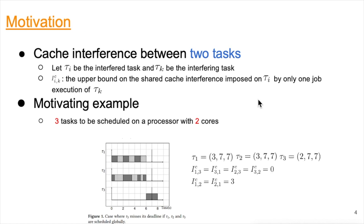Let's explain the cache interference between only two tasks. Let tau_i be the interfered task and tau_k be the interfering task. We use the symbol R_ik to denote the upper bound of the shared cache interference imposed on tau_i by only one job execution of tau_k. It has been shown in the literature how to calculate such a parameter. In this work, we assume that the cache interference R_ik between two tasks is known.